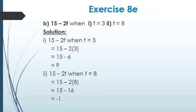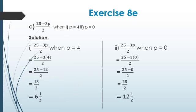Next Part B: 15 − 2f when f = 3, and when f = 8. For f = 3: 2 × 3 = 6, so 15 − 6 = 9. For f = 8: 2 × 8 = 16, so 15 − 16 = −1. Again the integers concept repeats here.